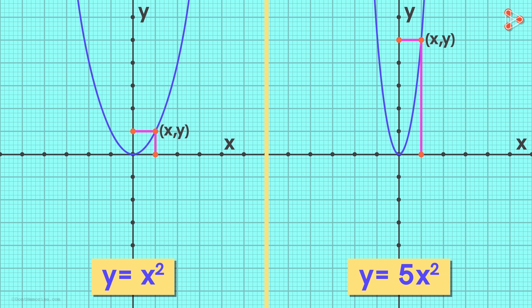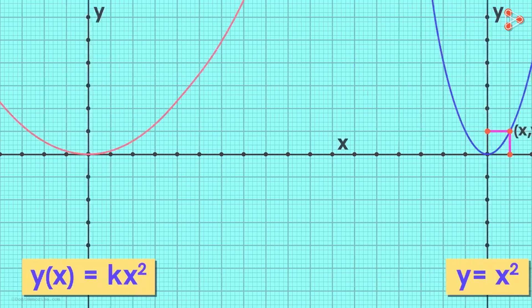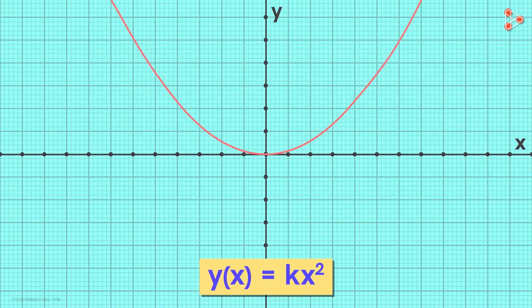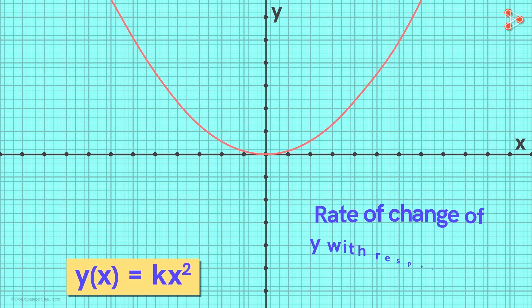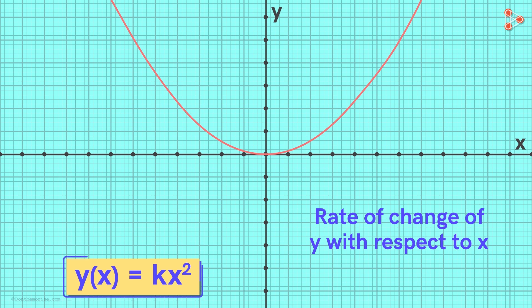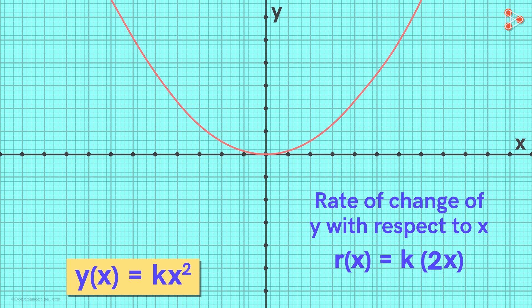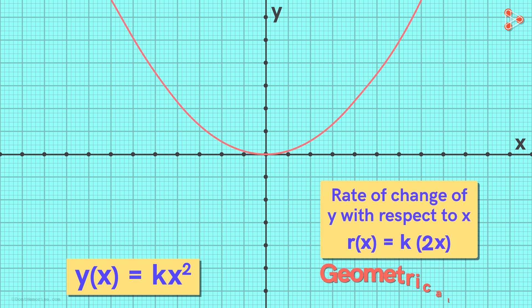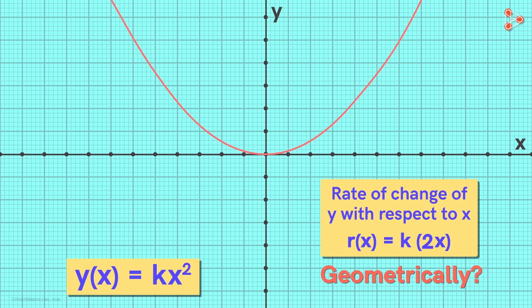Now let me ask you a question. In our previous video, we found out the rate of change in the dependent variable with respect to the independent variable for this function. We get this new function for the rate. So here, can you tell me what this rate means geometrically? Think about it and share your thoughts in the comment section below.